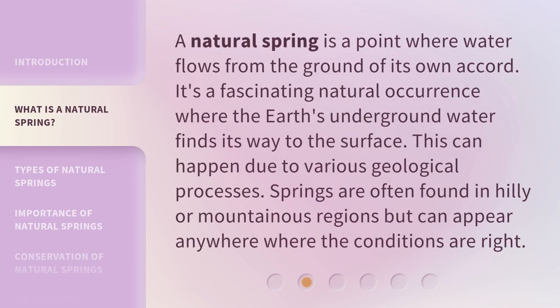A natural spring is a point where water flows from the ground of its own accord. It's a fascinating natural occurrence where the Earth's underground water finds its way to the surface. This can happen due to various geological processes. Springs are often found in hilly or mountainous regions but can appear anywhere where the conditions are right.